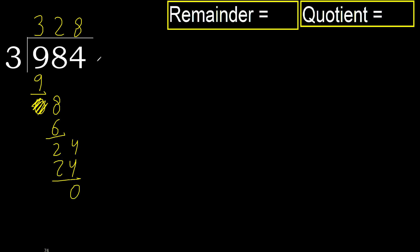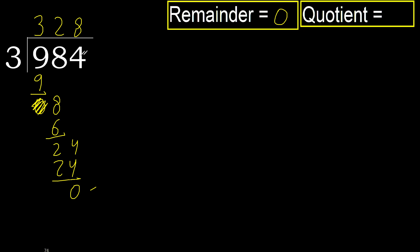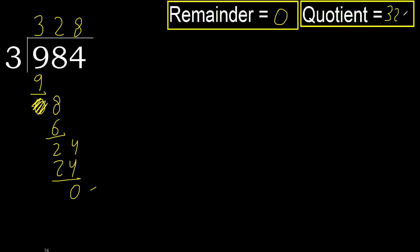Next, there is no number remaining, therefore we finish. The remainder is 0. Therefore, 984 divided by 3 equals 328. OK, thank you.